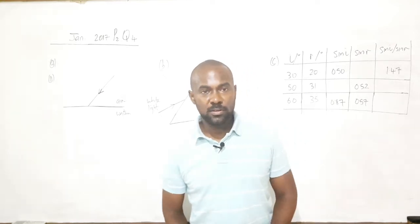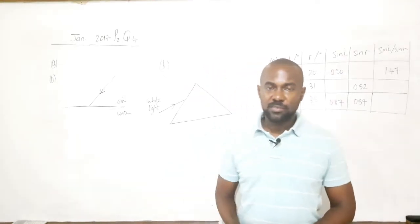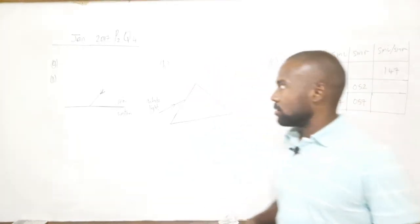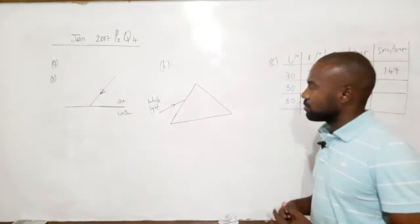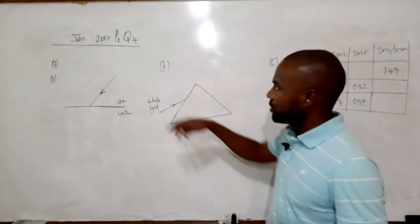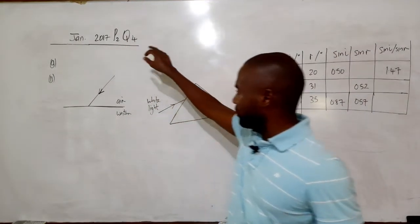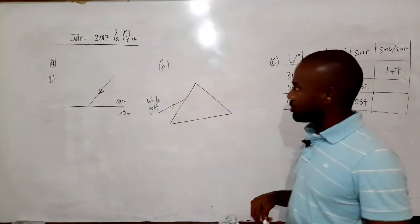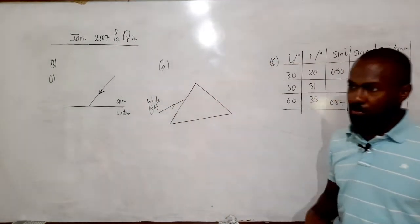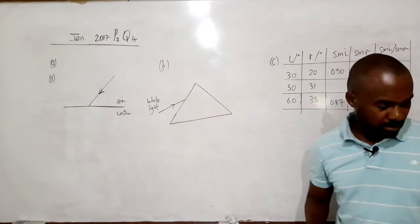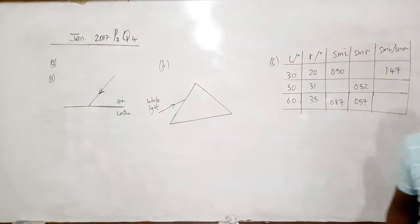In this video we continue to look at CSEC physics class-type questions. We'll be looking at the question from January 2017 Paper 2 Question 4, and this question deals with light and refraction.